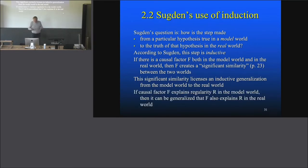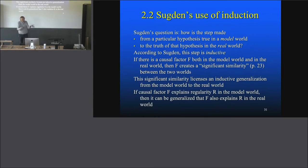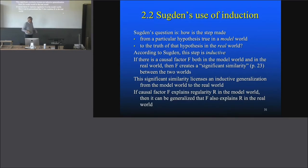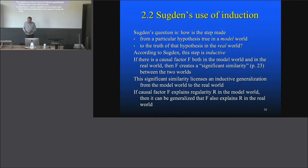If causal factor F explains regularity R in the model world, then it can be generalized that F also explains R in the real world. That's the inductive step: you learn that in that subset you have a natural kind, and then you can say that holds also in the rest — as with 10 pieces of copper that conduct electricity, you then say copper conducts electricity also in other cases.